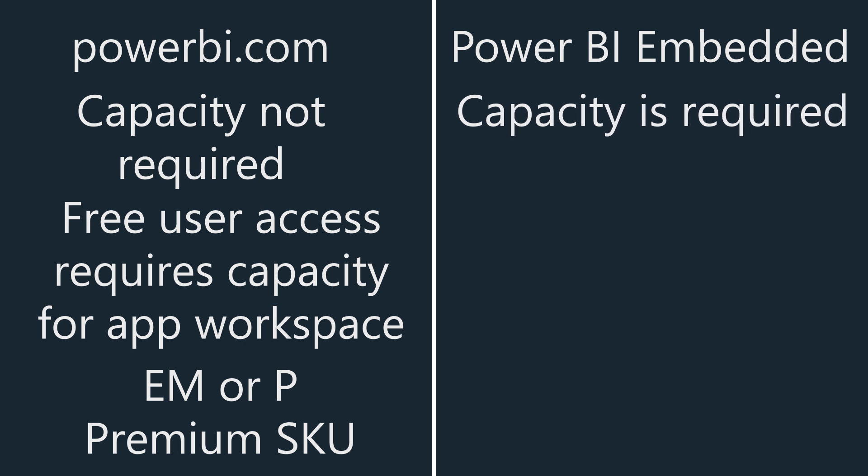For Power BI Embedded, capacity is a requirement — you have to back your app workspace with capacity when moving to production. In this case, any of the capacity SKUs — whether from Azure with Power BI Embedded or from Office with the premium EM or P SKUs — can be used when embedding for your customers. It is recommended that you use the Azure SKUs for Power BI Embedded for your capacity, as this gives you more flexibility in billing and aligns with other Azure services. There's nothing stopping you from using the Office SKUs if you choose to.